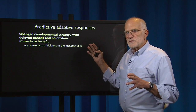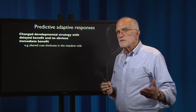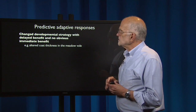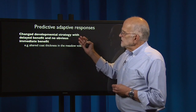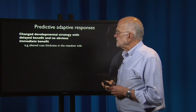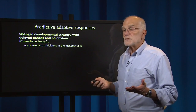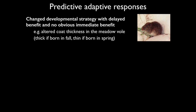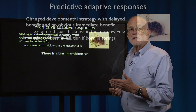The Barker hypothesis has been developed, particularly by Peter Gluckman and his colleagues, into the predictive adaptive response hypothesis — a change in developmental strategy with a delayed benefit and no obvious immediate benefit. We know what occurs in other species; for example, altered coat thickness in the meadow vole. Mothers giving birth to offspring that will grow up in cold weather give birth to offspring that already have heavier coats before the weather gets cold, so there is an anticipation involved.